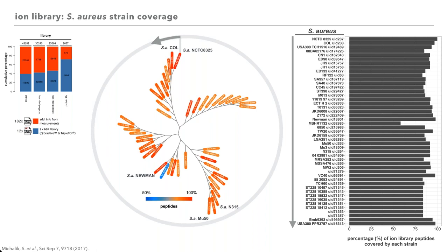The S. aureus fragment ion library constitutes a core set of assays which provide an excellent starting point for use with strains other than the one originally used. However, the variable parts of the proteome specific to your strain that are not in the library would need additional proteomic data to cover the strain-specific set of protein variants.